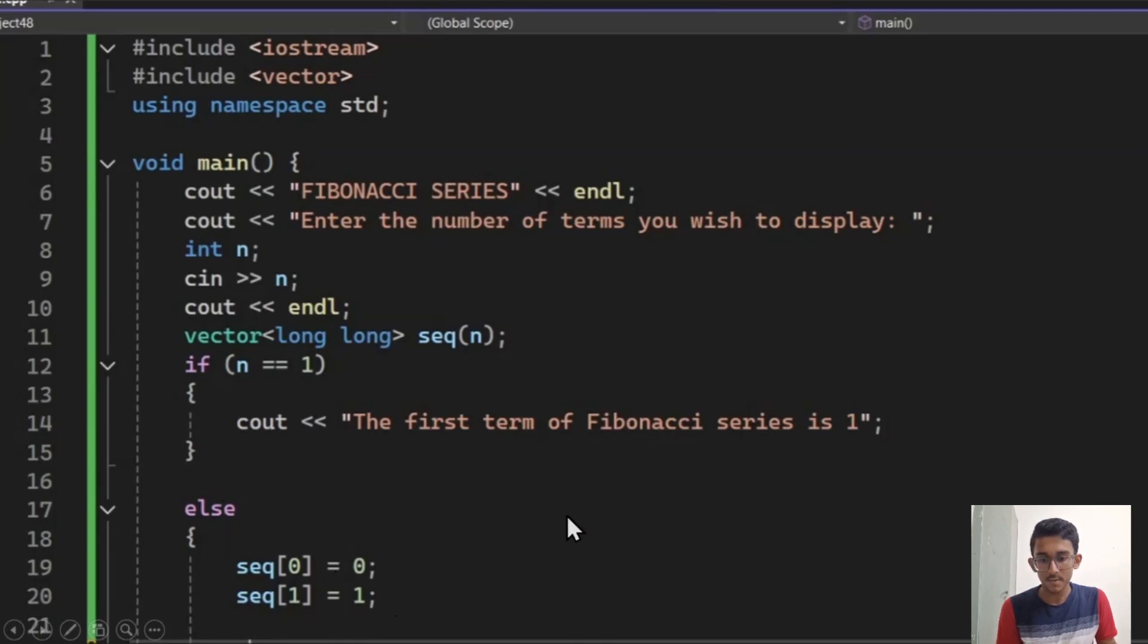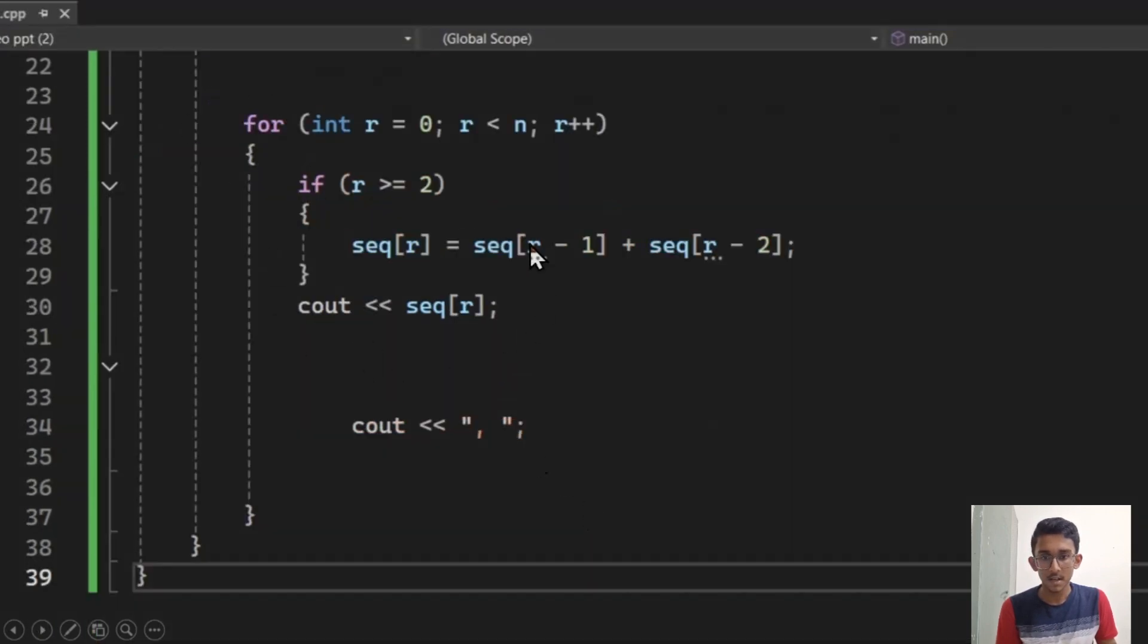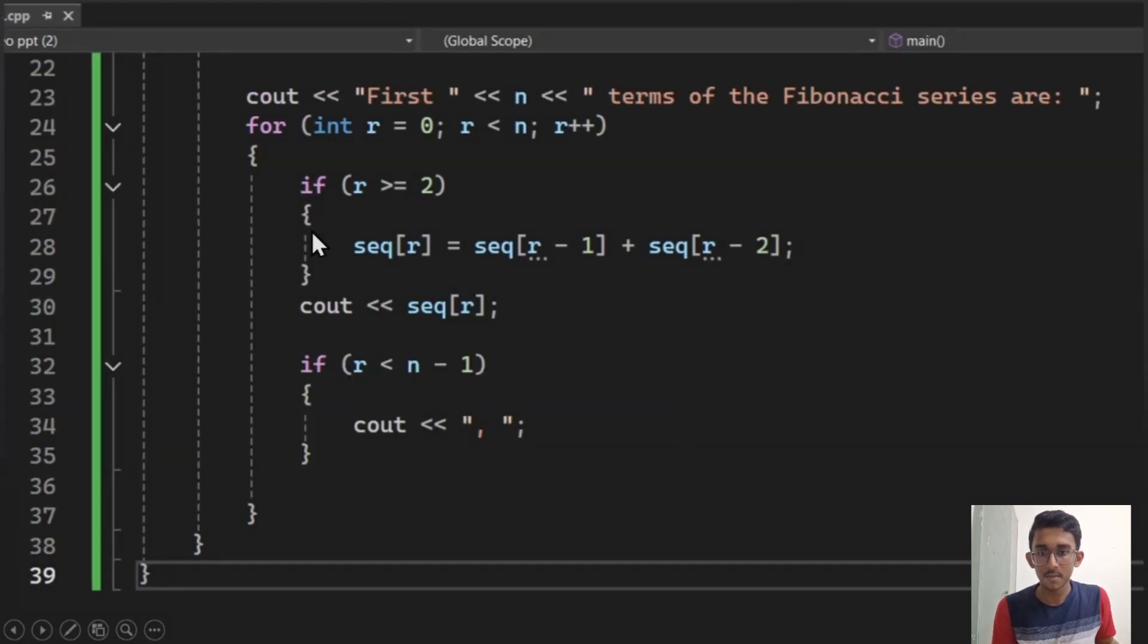Else, in the else statement I have just put the old code. Now in this part I have made a few changes also. I have given a simple output message: first n terms of the Fibonacci series are. Also I have made this small change. I have created this if statement here.